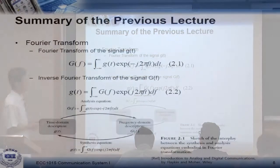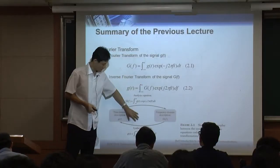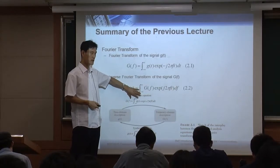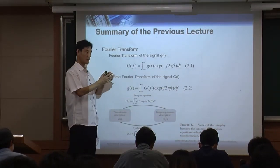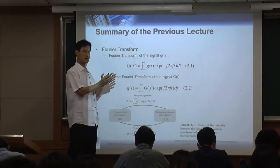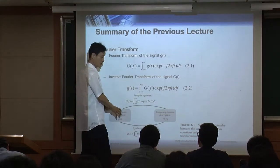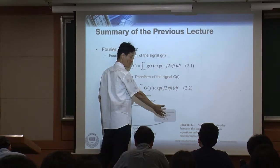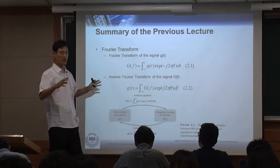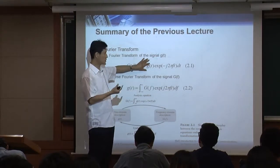We discussed the Fourier transform and some of its properties. This is the definition of the Fourier transform and the inverse Fourier transform. Regarding analysis and synthesis: analysis is like a prism — you get white light, put it into a prism, and the prism analyzes the white light into the whole visible spectrum, the whole rainbow of colors.